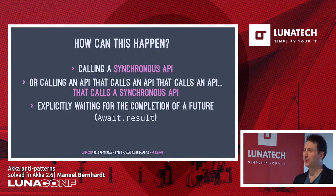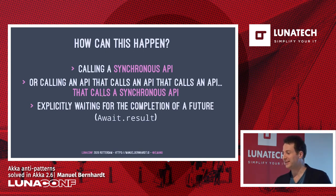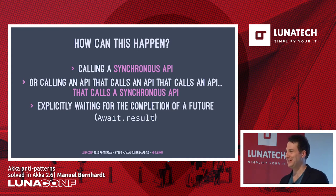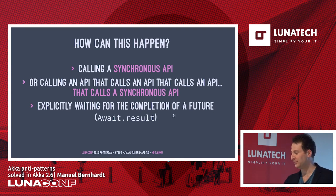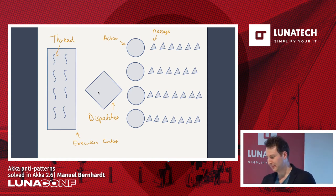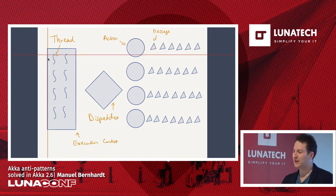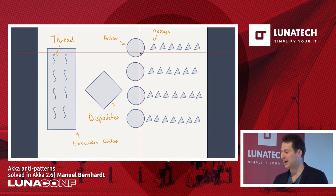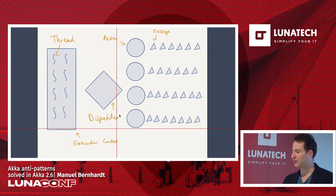How can this happen? You might call a synchronous API. Or you call an asynchronous API but it internally calls a library that does something blocking. Or you're explicitly waiting for an asynchronous computation — don't do that in production code. Why is it a problem? Akka has a thread pool backing it as an execution context. There's a dispatcher that hands threads to actors; by default the batch size is five messages per actor.